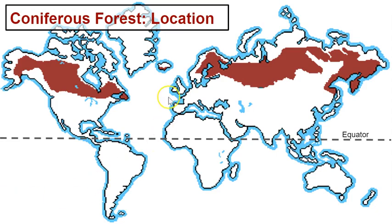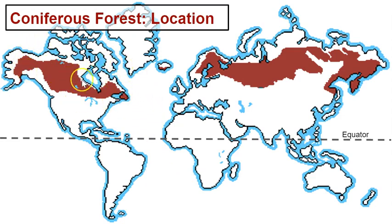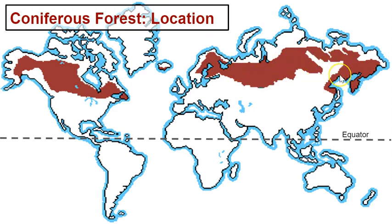Looking on our map, we can see that coniferous forests are located only in the northern hemisphere — there are no coniferous forests in the southern hemisphere. Coniferous forests are located in Alaska and Canada, and can be found coming down into Washington and Oregon as well. You can also find coniferous forests in Europe and some in northern Russia.